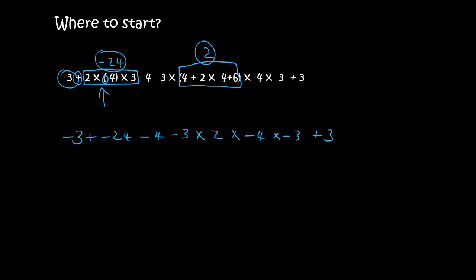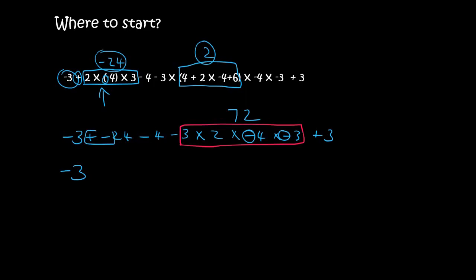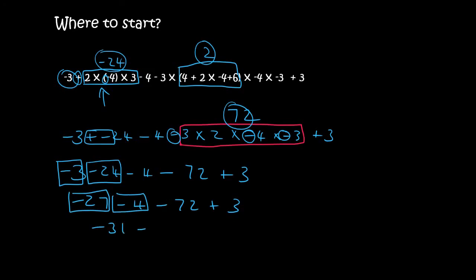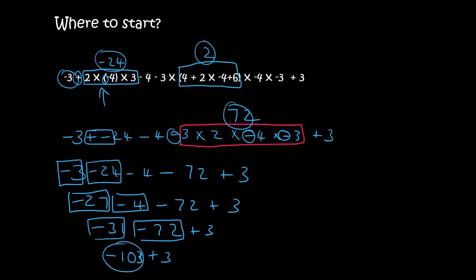Now I should choose the times first. That's going to be three times two which is six, six times four is twenty-four, twenty-four times three is seventy-two. I've got two negatives which makes a positive. So all the multiplying is done — now I rewrite everything: minus three, then a plus and a minus is a minus, then minus seventy-two plus three. Moving from left to right: if you owe three rand and then you owe another twenty-four rand, you now owe twenty-seven rand. Owe another four rand, that's thirty-one rand. Owe another seventy-two rand, now you owe one hundred and three rand. But someone gives you three rand, so you only owe one hundred rand.